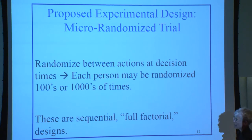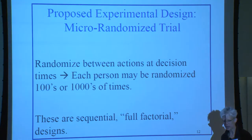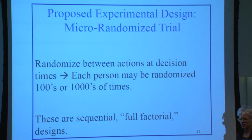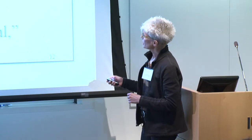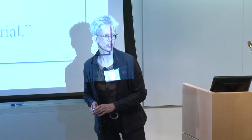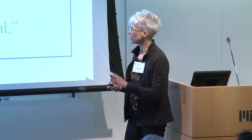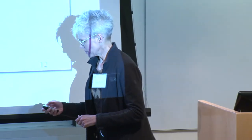Goal one is about how to design a clinical trial to collect high-quality data for building mobile health interventions — essentially building a control policy. What we're proposing is that people run a micro-randomized trial. This term is already out in the community and people are already running them. In these trials, each person is randomized at each decision point — in HeartSteps that's 210 randomizations. I call them sequential full factorial designs. Right now there has not been any real experimental design in this field, and there is a real need for it.